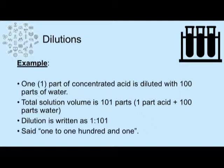Here is another example: we have one part of a concentrated acid that needs to be diluted with one hundred parts of water. So the total solution is one hundred and one parts — one part acid plus one hundred parts of water. The dilution would be written one colon one-oh-one, and you would say it one to one hundred and one.